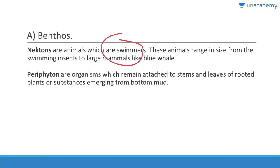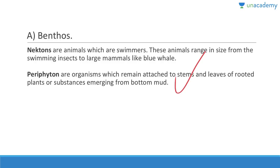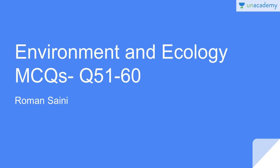Question 50: In an aquatic ecosystem, the organism found living at the bottom of a water mass is known as benthos. Nektons are swimmers, ranging in size from insects to large mammals like blue whales. Periphyton are organisms that remain attached to stems and leaves of rooted plants or substances emerging from the bottom mud.